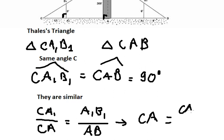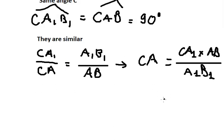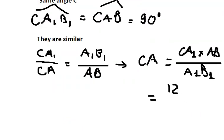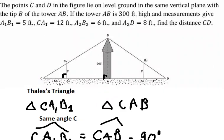So we have CA equals CA1 times AB divided by A1B1. We know that CA1 is 12 feet and AB is 300 feet.